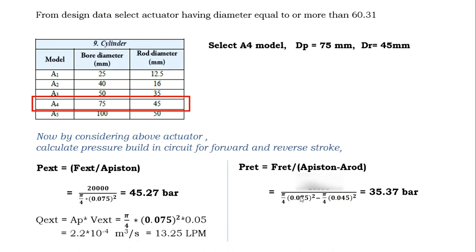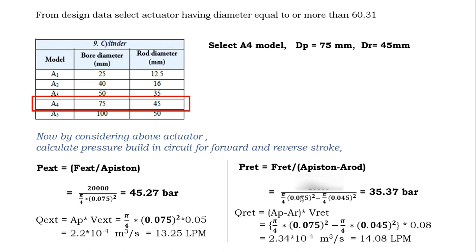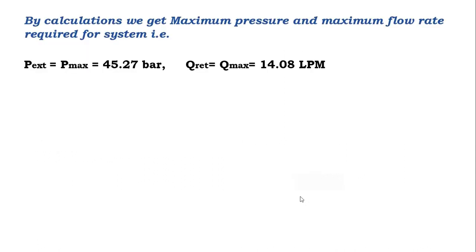Now find the flow rate for extension and for retraction. By calculations, the maximum pressure required for the system is 45.27 bar, which is built at the time of extension, and the maximum flow rate is 14.08 liters per minute, which occurs at the time of retraction. Using these two maximum parameters we proceed to find the other components.